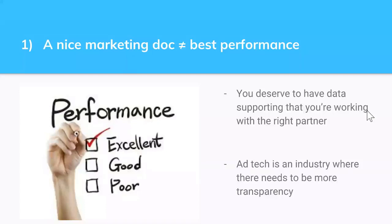First and foremost: performance. It might seem obvious, but the focus of a lot of ad tech partners is not necessarily performance. We've clearly seen it over the last eight years. Data, ad placements, reporting — all very important. But at the end of the day, whatever your business KPIs are — the best page RPM, the best CPM, the best revenue per session — whatever the most important metric is for you as a publisher is what matters. You deserve to know, backed by data and statistics, what header bidding wrapper performs best for your site.